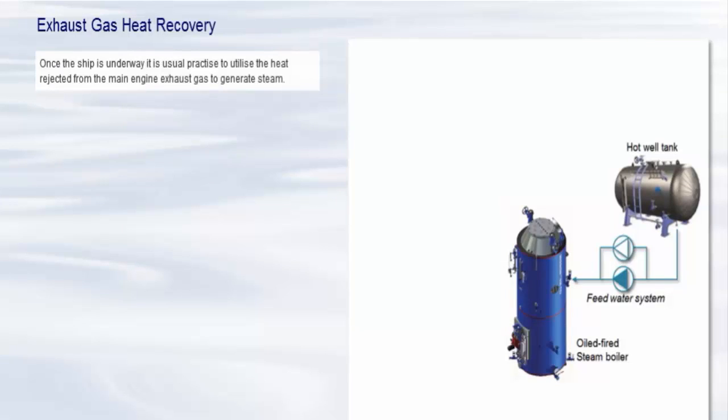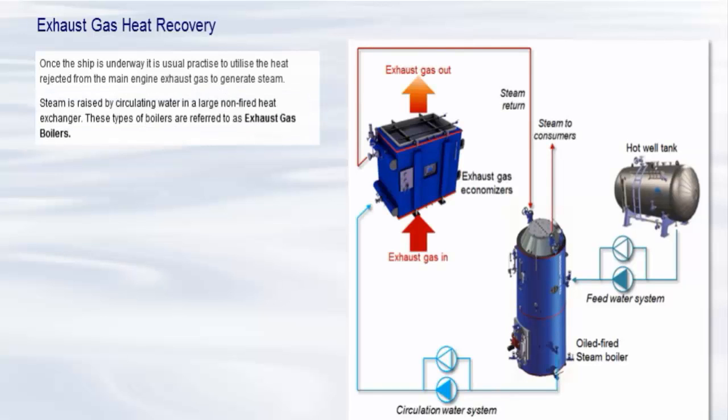Once the ship is underway, it is usual practice to utilize the heat rejected from the main engine exhaust gas to generate steam. This means that the boilers do not need to burn valuable fuel oil whilst at sea. Steam is raised by circulating water in a large non-fired heat exchanger. These types of boilers are referred to as exhaust gas boilers. The fired and non-fired boiler systems are usually interconnected.